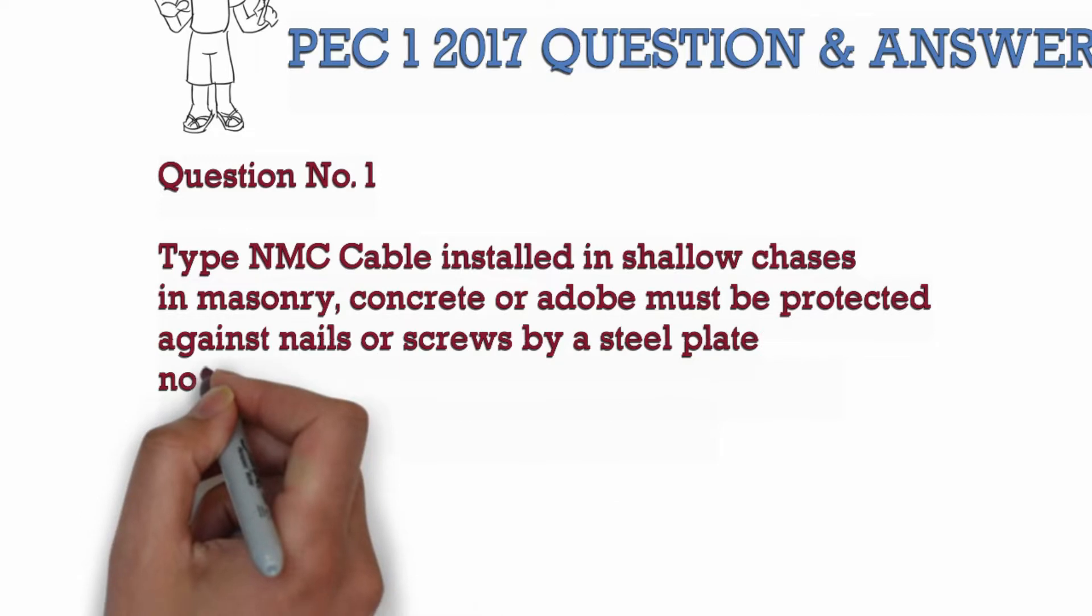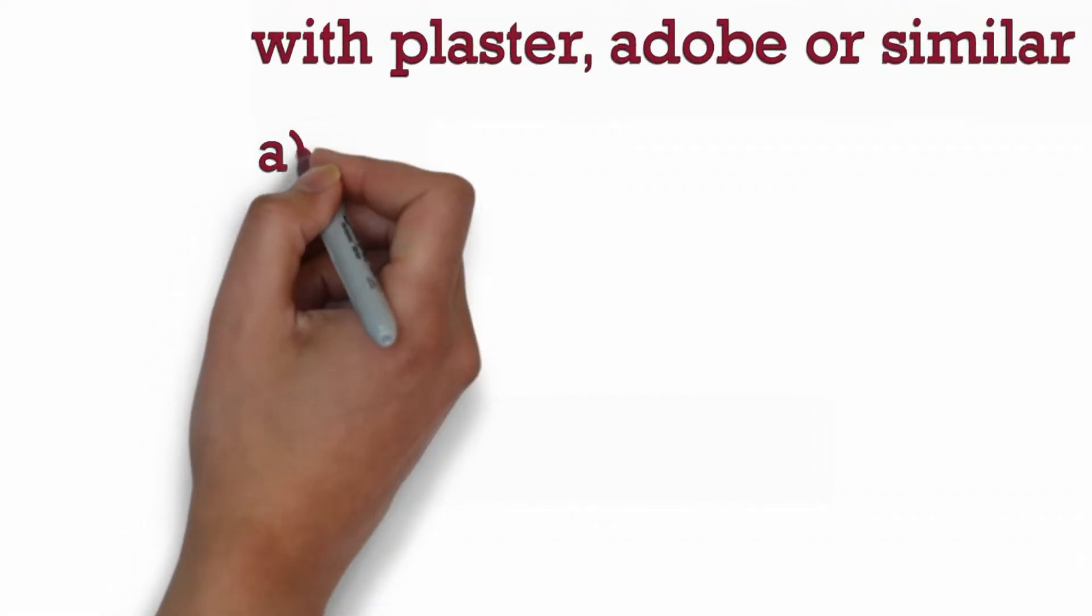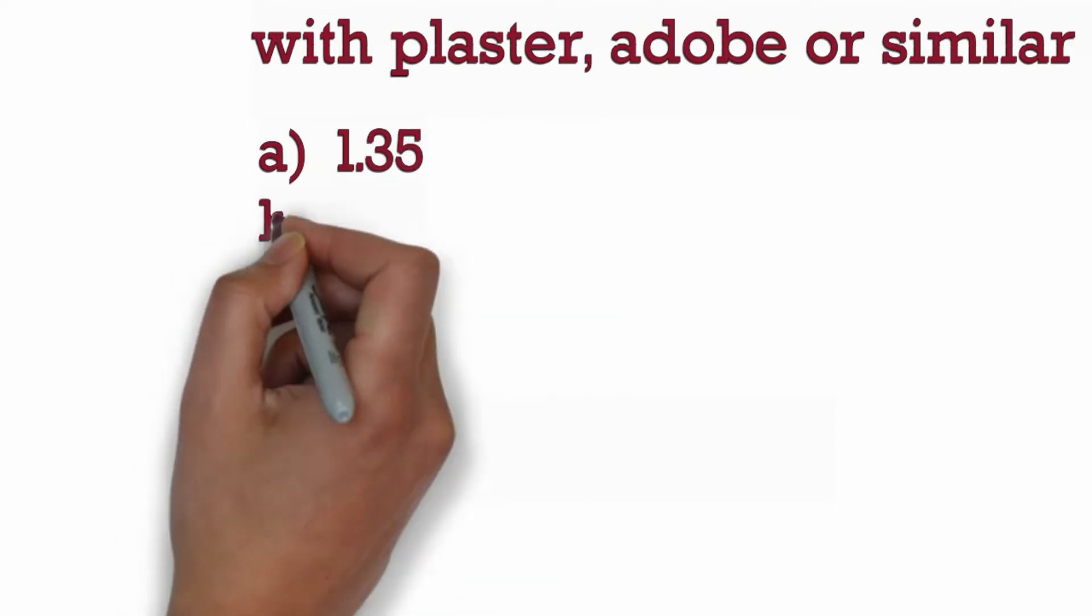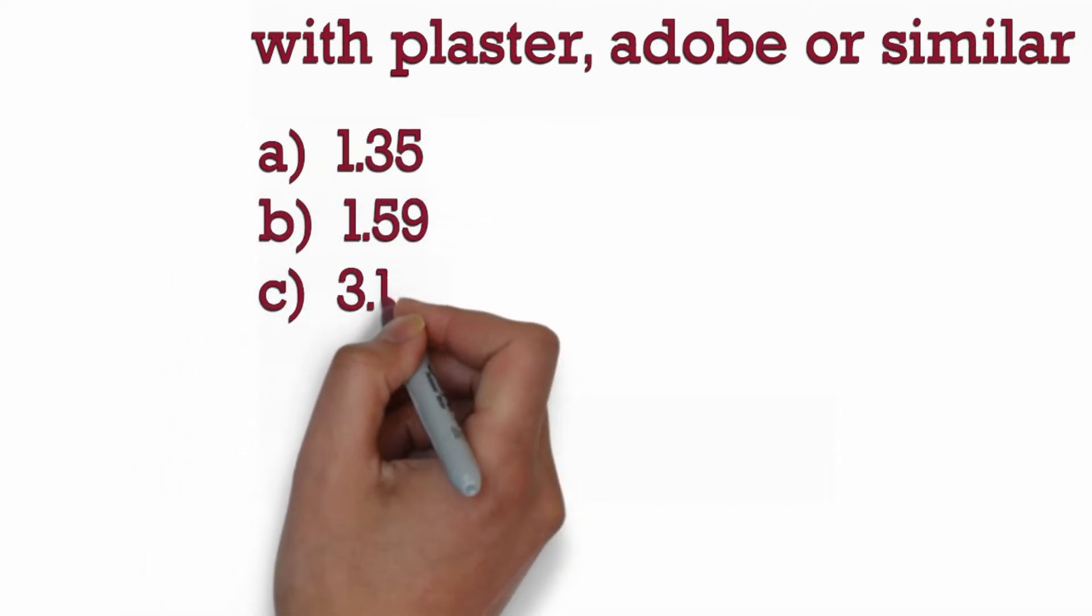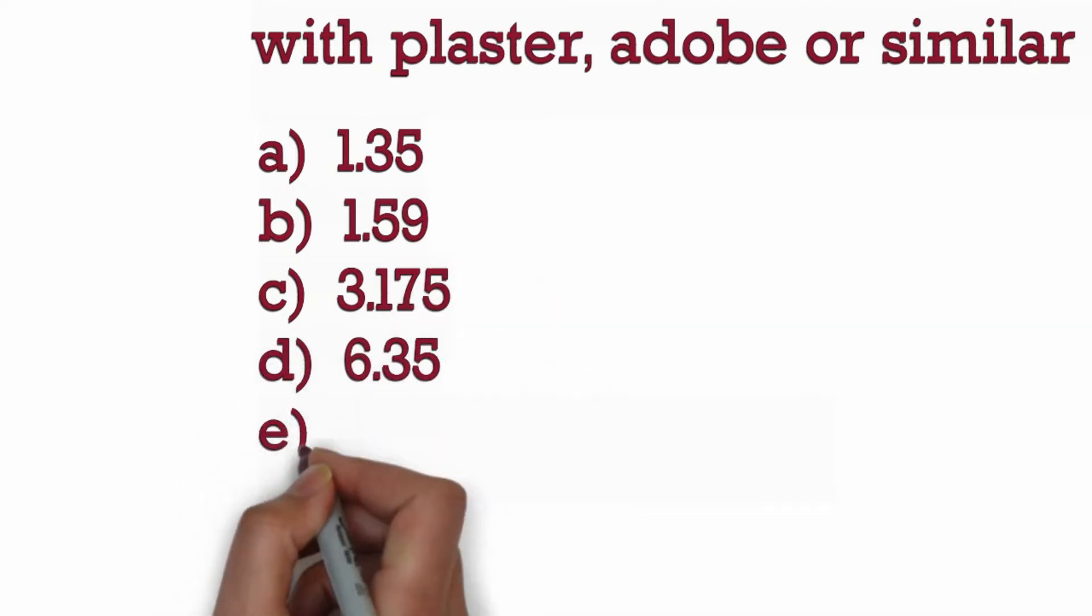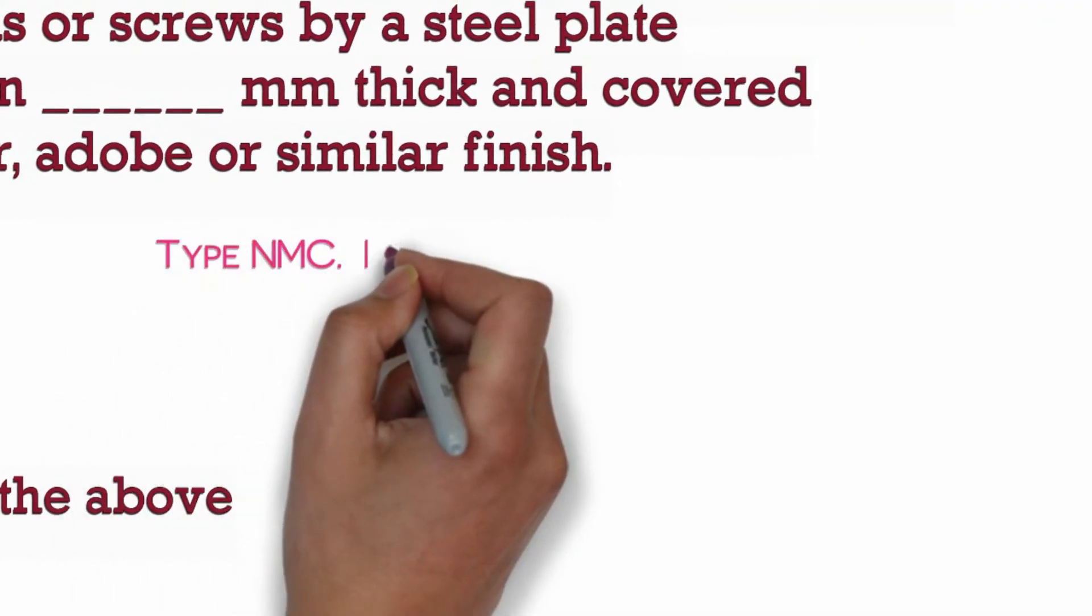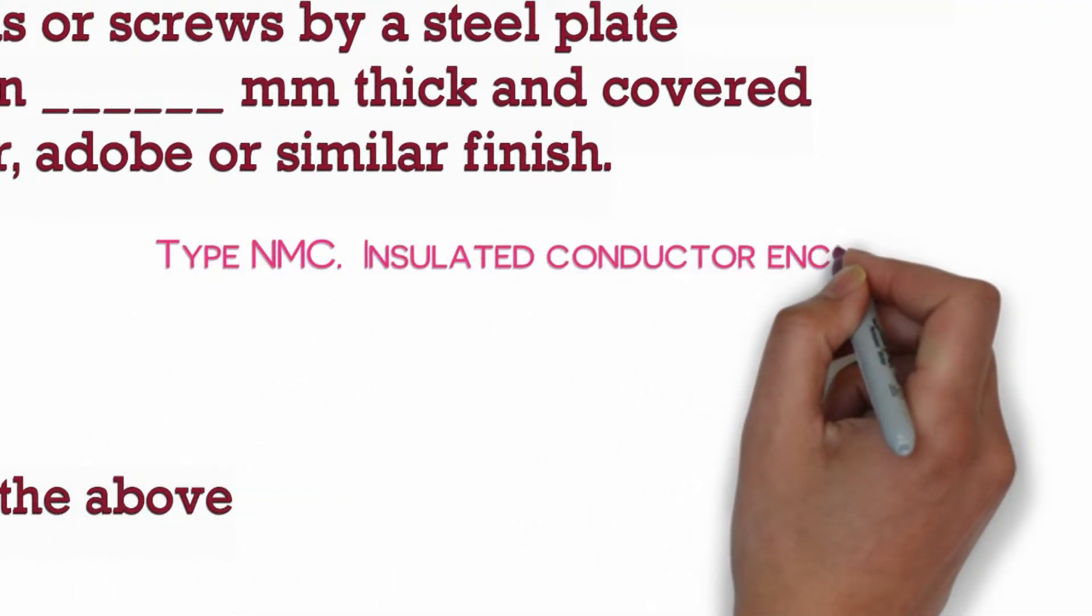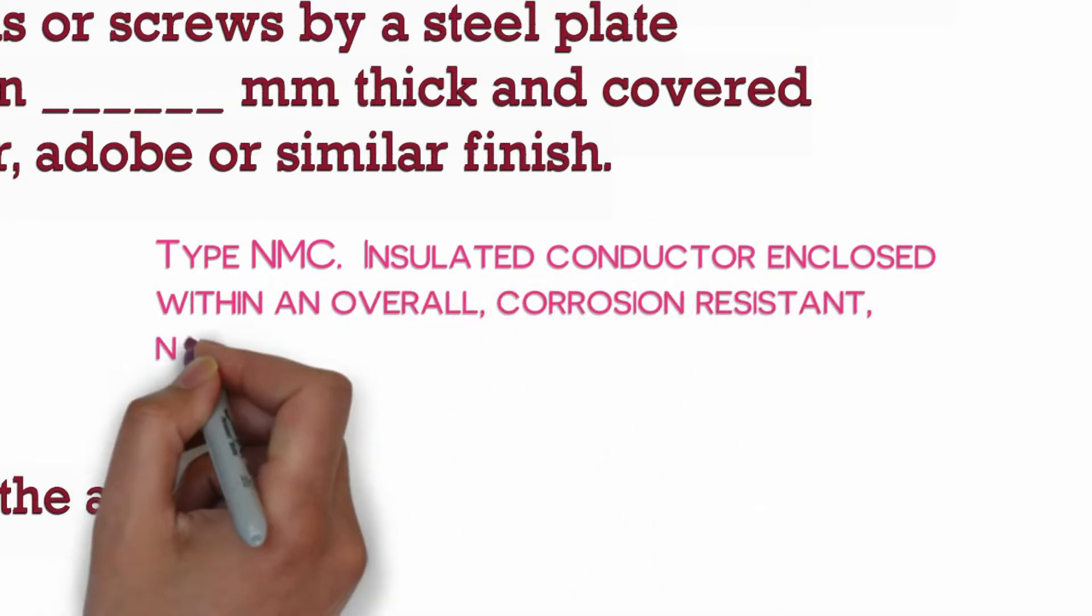A. 1.35, B. 1.59, C. 3.175, D. 6.35, E. None of the above. Type NMC: insulated conductor enclosed within an overall corrosion-resistant non-metallic jacket.